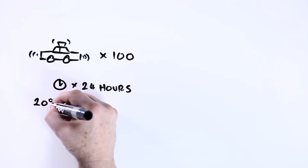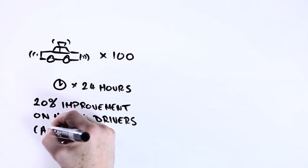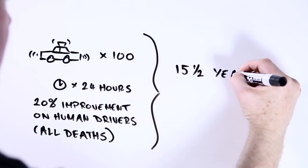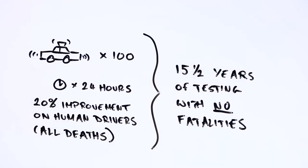According to research from the Rand Corporation, if a company had a fleet of 100 vehicles driving around the clock and wanted to show a 20% improvement in car-related deaths somewhere like Phoenix, it would take around 15 and a half years of testing with no fatalities to achieve this.